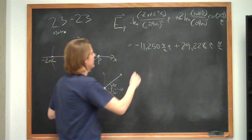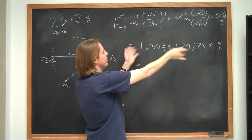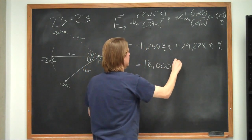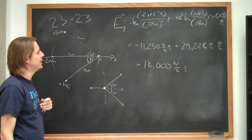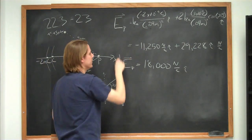So we add these up to get the total field, and we get it's close to, when you take it out, it's very close to 18,000 newtons per coulomb in the i-hat. So this one's bigger than this one, and you subtract, and you get 18,000. So the E field at P is this.